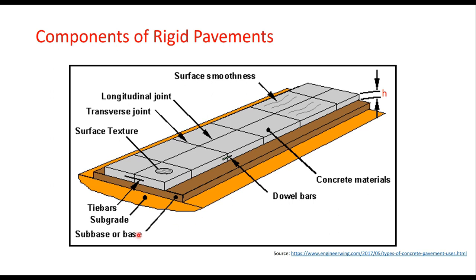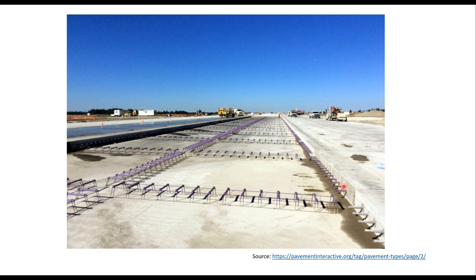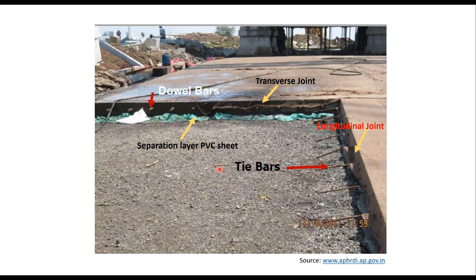The components of rigid pavements are: subgrade, which is natural soil compacted at OMC and dry density; above that a base or sub-base course; and above this a slab of thickness h. These slabs are held together in the longitudinal direction through dowel bars to transfer the load of a moving wheel from one slab to another, and in the transverse direction they are held together with tie bars. The slabs have longitudinal joints as well as transverse joints. There is also a separation layer, which is a PVC sheet laid between the DLC and the concrete slab.